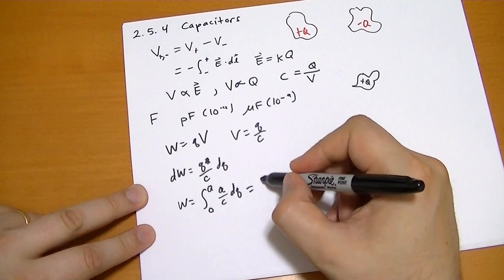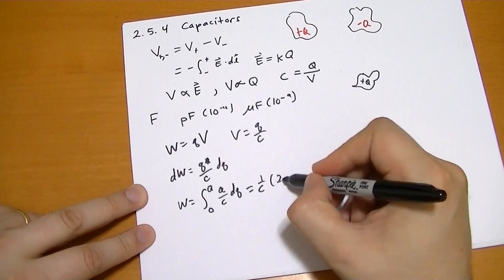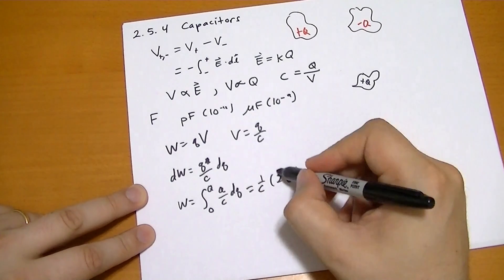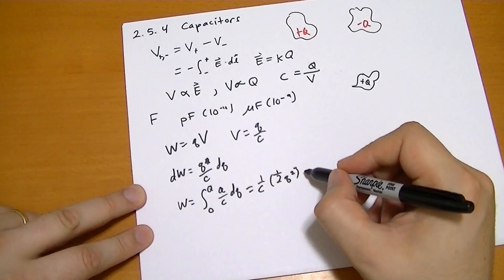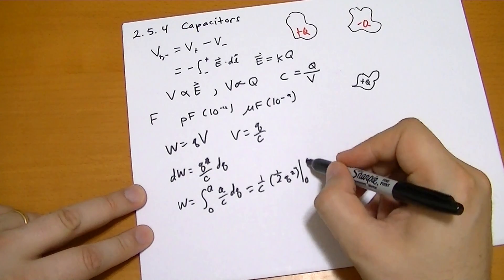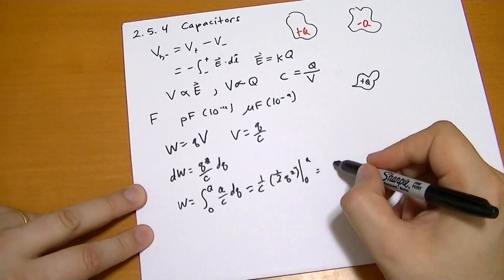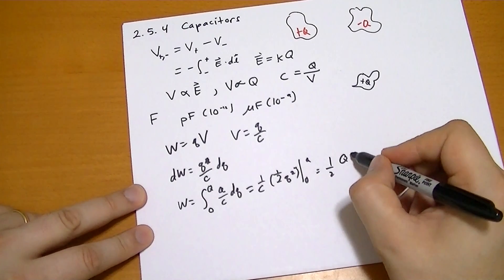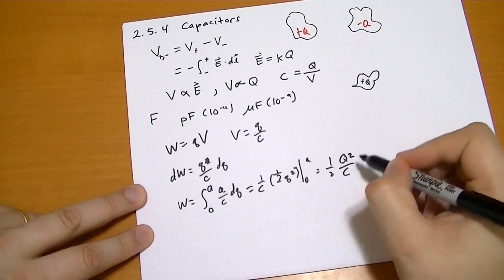Which, this is a rather trivial integral, is just going to be one over C, one half q squared, evaluated between zero and Q, so it's just one half Q squared over C.